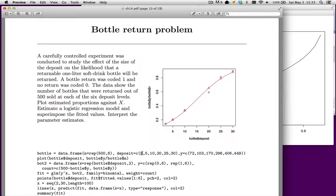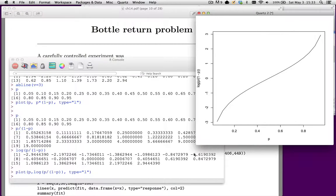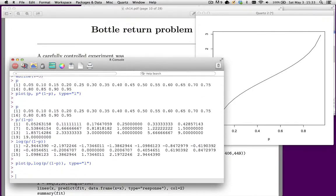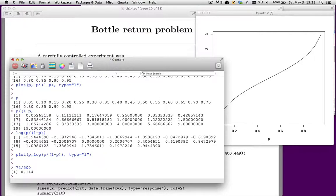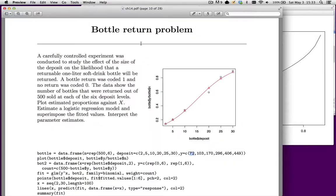So when I charge 2 cents, 72 out of the 500 bottles get returned. Now we can form a very simple estimate of the probability that it's returned. If we take 72 divided by 500, it looks like there's about a 14% chance that the bottle comes back. And that's what this black circle shows. That's 14%. If I charge 5 cents, so here's 5 cents, 103 come back. We can almost do that one in our head. 103 divided by 500 is going to be about 20%, a little bit more than 20%. So that's that next circle.